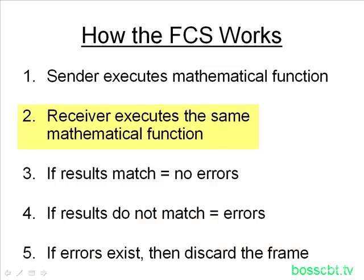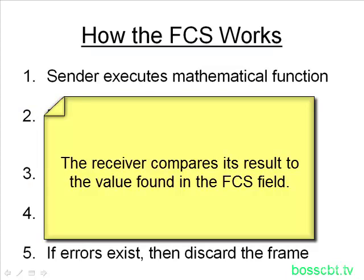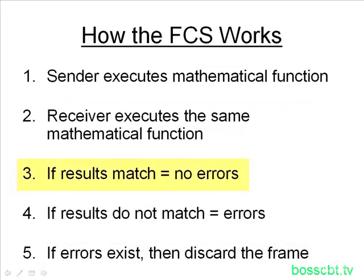The receiver receives the frame and then executes the exact same mathematical function that the sender ran, using the same frame as input — repeating exactly what the sender did. The result that the receiver gets should be the same as the sender's. So it takes its result and compares it to what it found in the FCS field, which the sender populated. If the results match, we know the frame was good and no errors exist, because the mathematical function is the same on both sides and the only thing that could change is the frame itself.